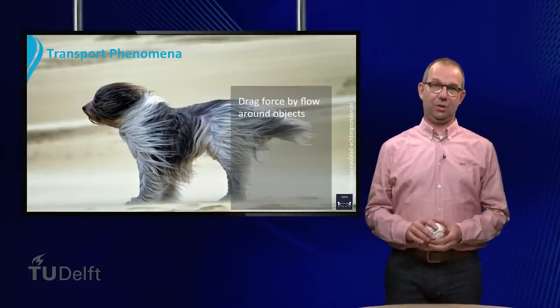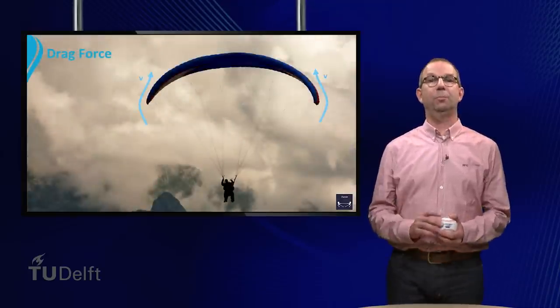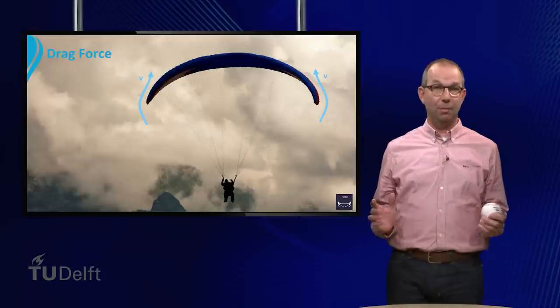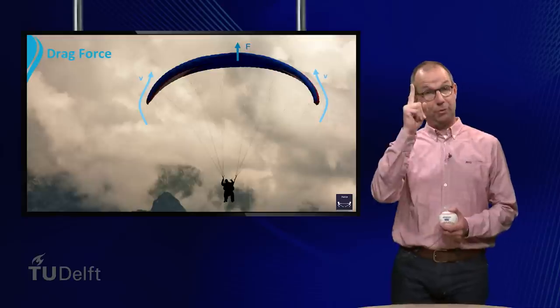There are plenty of examples for this drag force. A paratrooper uses a chute to slow down his fall. Here the air is from the perspective of the paratrooper flowing past him, the direction of the flow is upwards, resulting in an upward force.